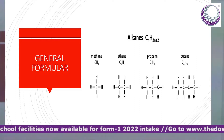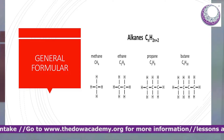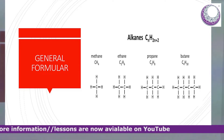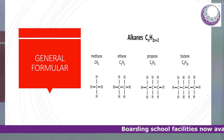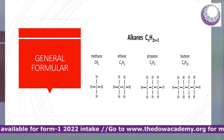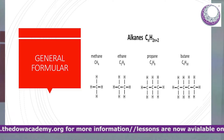We have the first four alkanes. Methane which contains one carbon atom, then ethane which contains two carbon atoms and six hydrogen atoms. Then propane which has got C3H8, and then butane which has got C4H10.